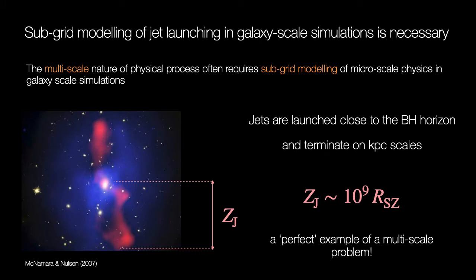Galaxy formation is an inherently multi-scale problem and nowhere is this more obvious than when considering AGN jet launching. The jet lobes can propagate to kiloparsec scales but they are launched close to the black hole horizon.